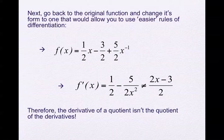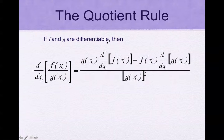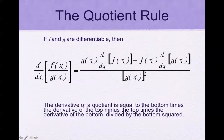For product and quotient, we have new different rules. The quotient rule is very similar to the product rule. If f and g are differentiable, the derivative of f/g equals the second function times the derivative of the first, minus the first times the derivative of the second, all divided by g squared. In words: bottom times derivative of top, minus top times derivative of bottom, divided by the bottom squared.